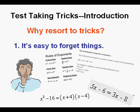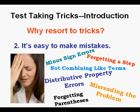But number one, it's easy to forget things. Number two, it's easy to make mistakes. There are minus sign errors, forgetting steps, combining like term errors, distributive property errors, and many more things that we don't have time to go into.